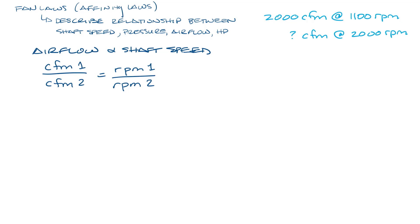Well you can use this equation to get CFM2 equals CFM1 times RPM2 divided by RPM1. And when we put our numbers in there, we get that the CFM would be about 3636 CFM.